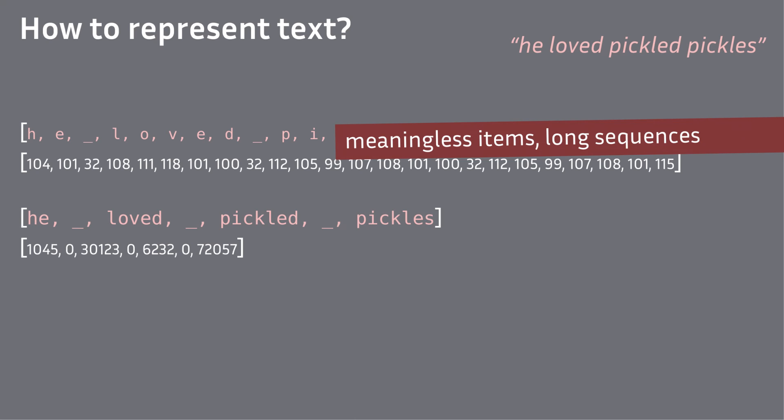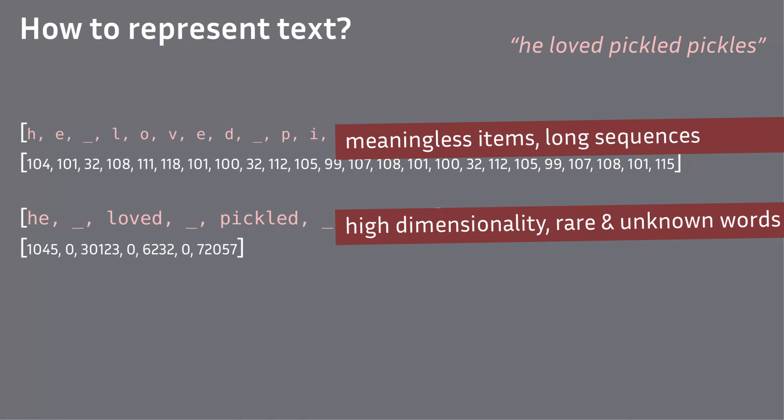Okay, so we represent each word separately. There is an embedding or index for each word that we saw in the training corpus. And again, what's the problem with that? If we didn't see the word 'pickles' during training, then we would have no embedding to assign to it.